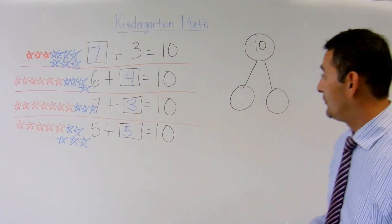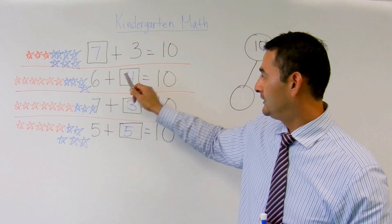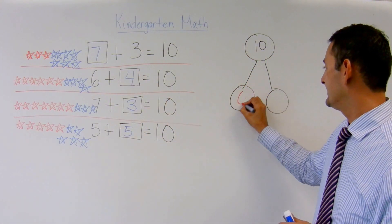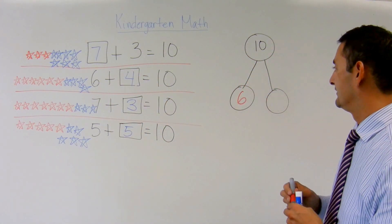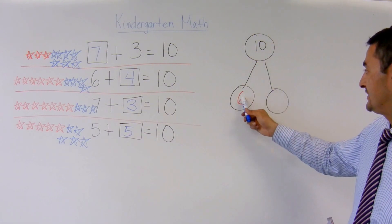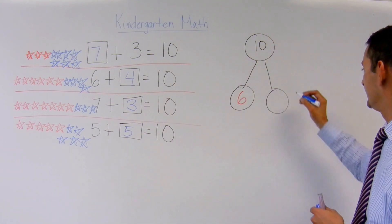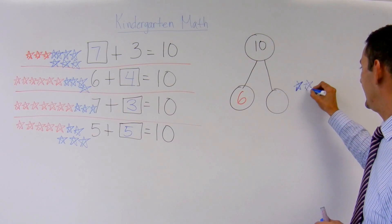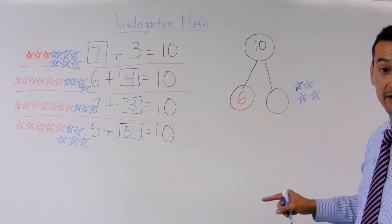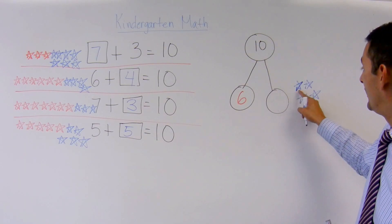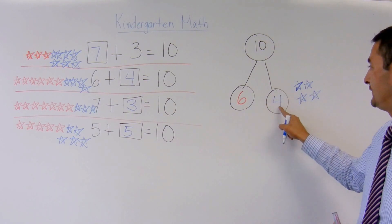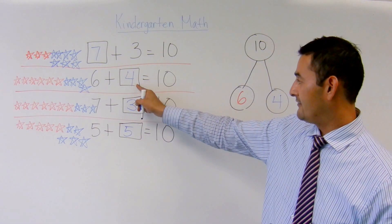The next number is: I have 6 plus something equals 10. I'm going to put my 6 there. I've got my 10 up there. So let's go ahead and count: 6, 7, 8, 9, 10. How many do I have here now? 1, 2, 3, 4. So 6 plus 4 is 10.